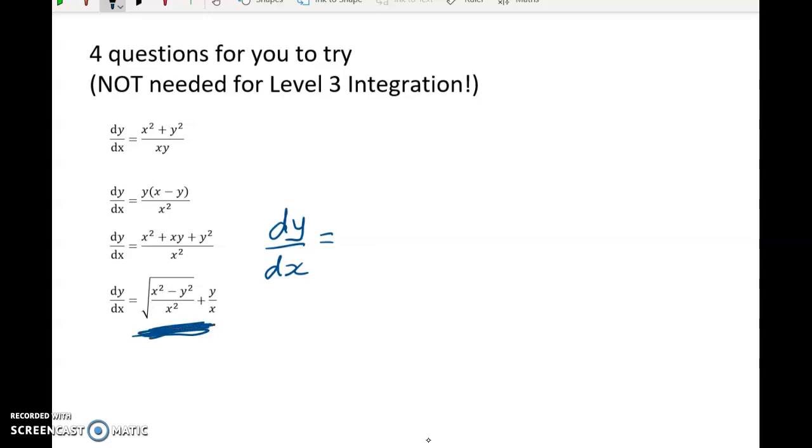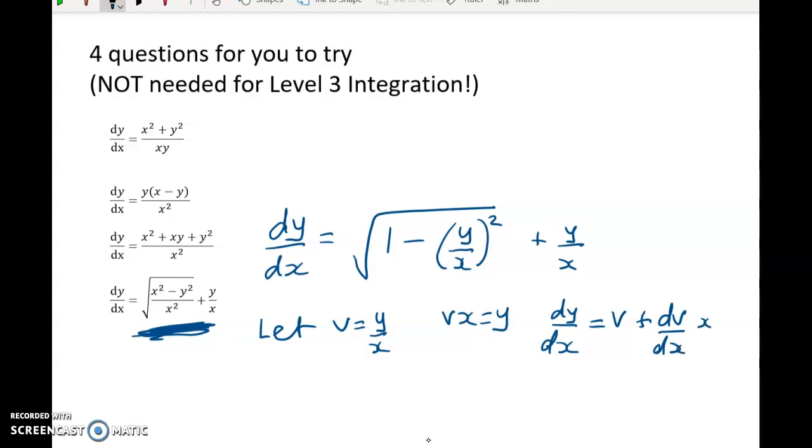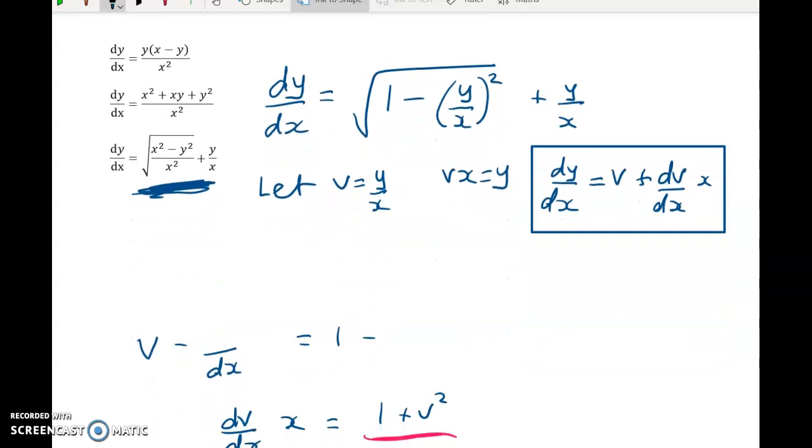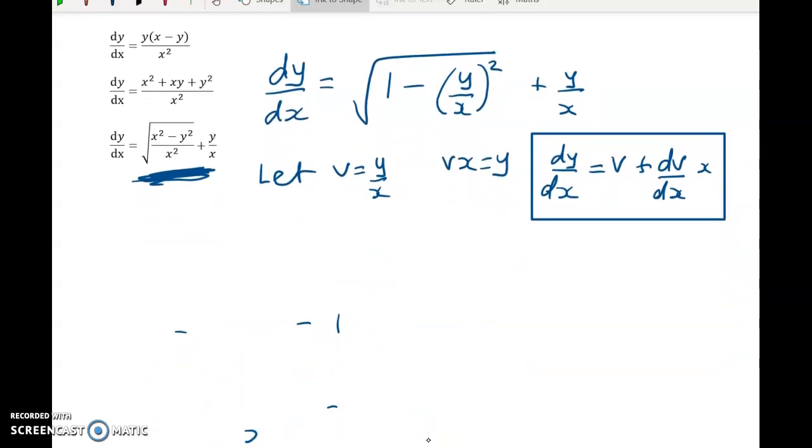So dy by dx is equal to the square root of 1 minus y over x squared plus y over x. So let V equal y over x. Vx equals y. dy by dx is equal to V plus dV by dx times x. I think that's the key bit that you have to understand to make all of this work out. The rewriting part is really easy now. So we've got V plus dV by dx times x is equal to the square root of 1 minus V squared plus V. And again, with this, you should be able to see, if you're watching this video, the inverse sine about to appear.